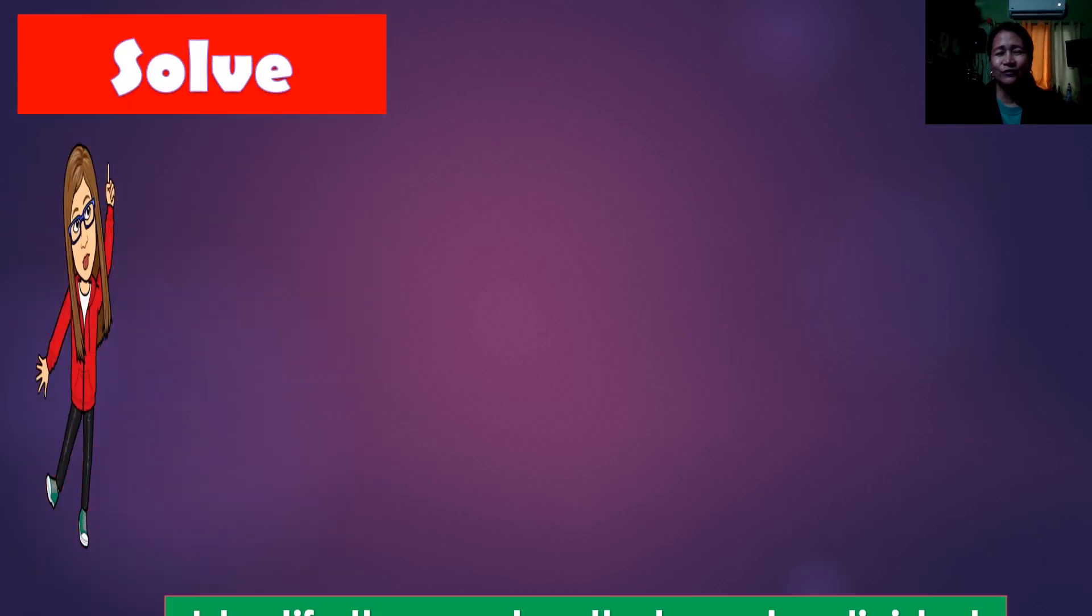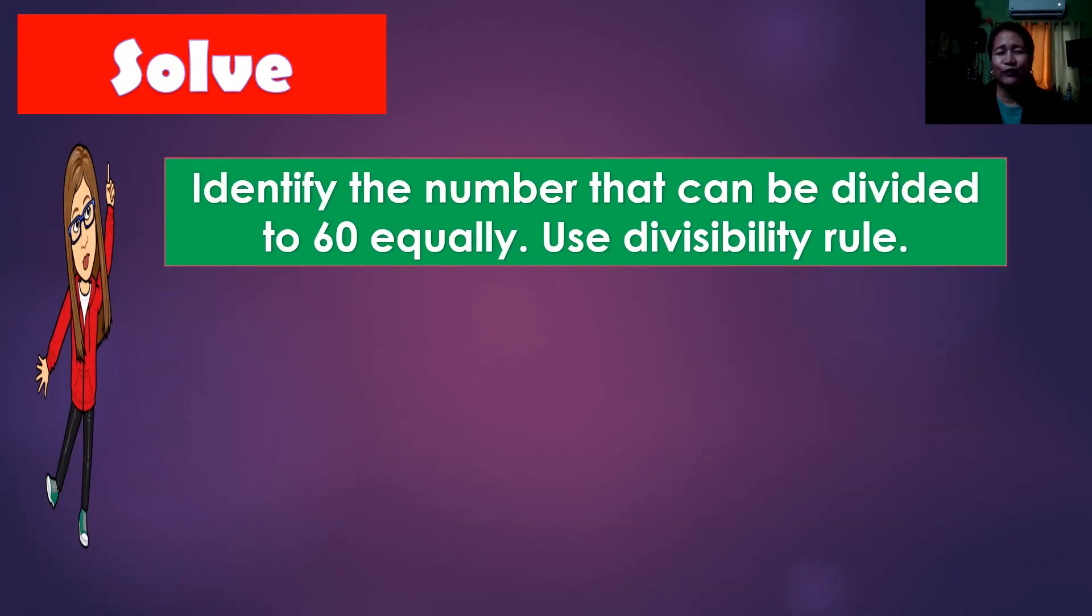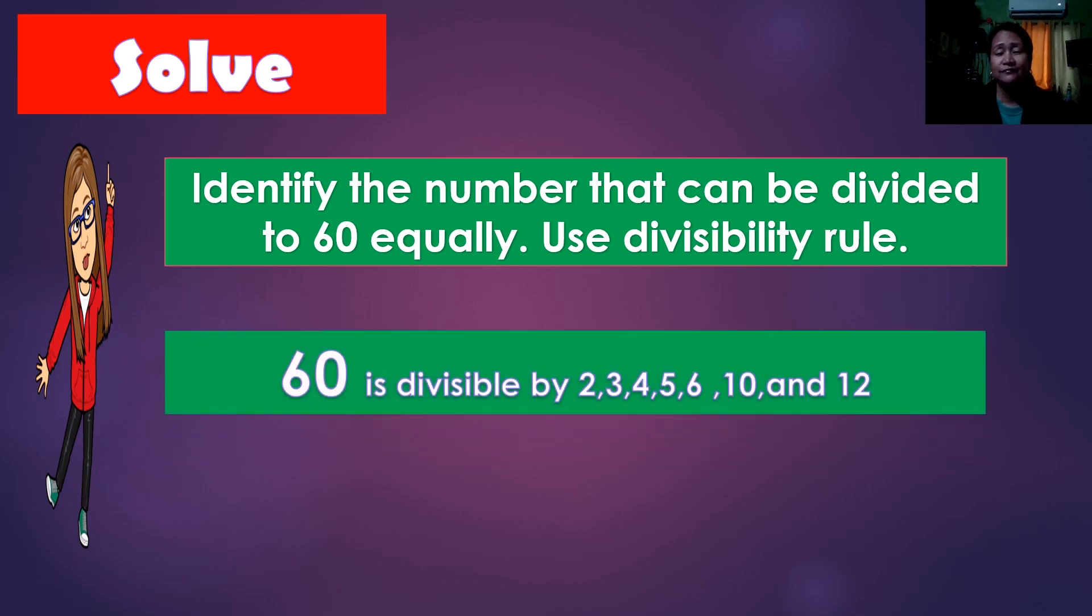So solve. We have to identify the numbers that can be divided to 60 equally. So we have to use the divisibility rules. So 60 is divisible by 2, 3, 4, 5, 6, 10, and 12.